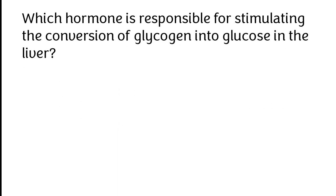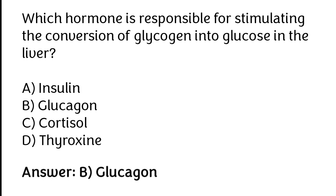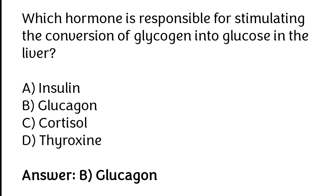Which hormone is responsible for stimulating the conversion of glycogen into glucose in the liver? Insulin, Glucagon, Cortisol, Thyroxine. The correct answer is Option B — Glucagon hormone is responsible for stimulating the conversion of glycogen into glucose in the liver.